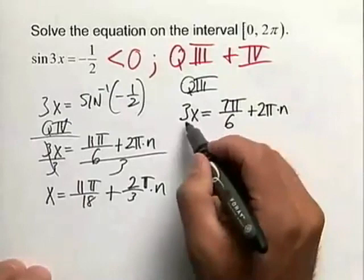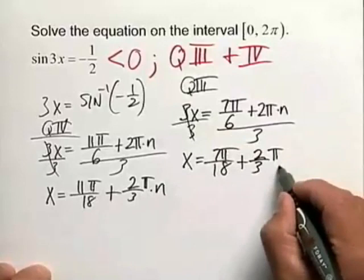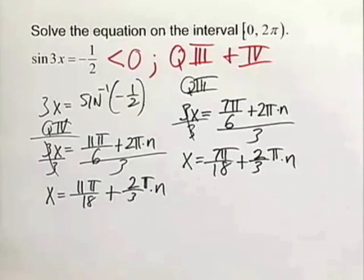As before, we divide both sides by 3. So from this, x is then equal to 7 pi over 18 plus 2 thirds pi times n. So these are the infinite number of solutions in both quadrants 3 and quadrant 4 that satisfy this trigonometric equation.